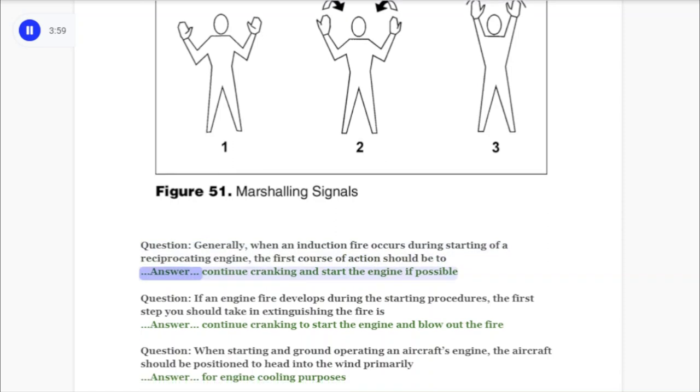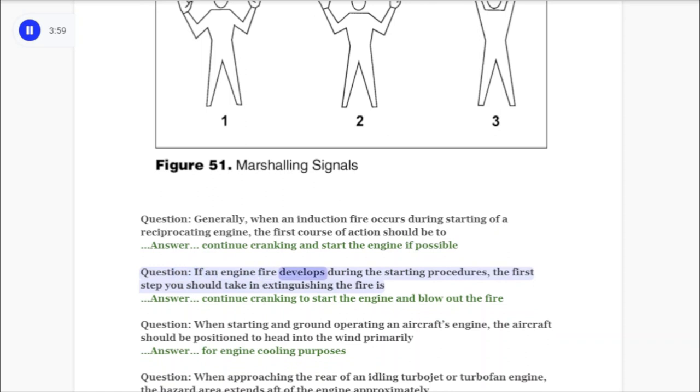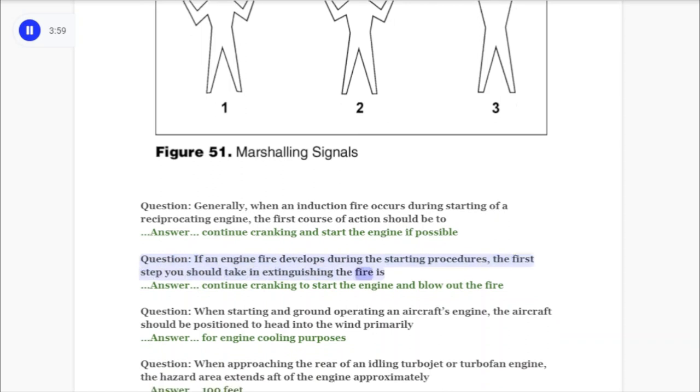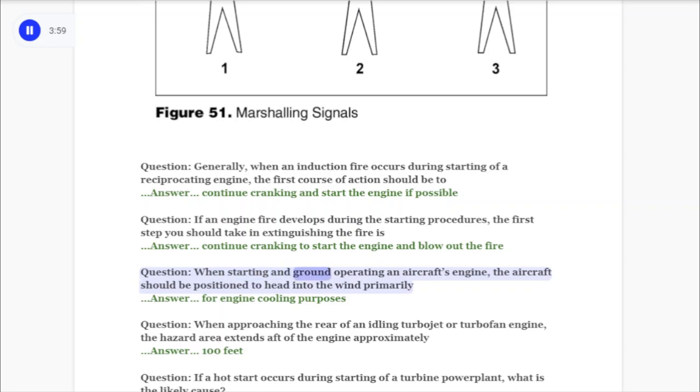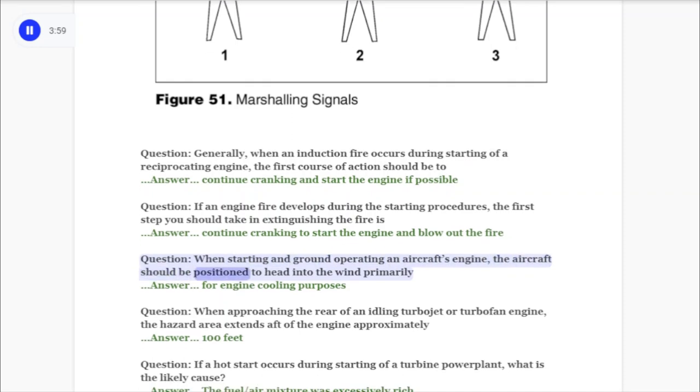Question: If an engine fire develops during the starting procedures, the first step you should take in extinguishing the fire is? Answer: Continue cranking to start the engine and blow out the fire. Question: When starting and ground operating an aircraft's engine, the aircraft should be positioned to head into the wind primarily? Answer: For engine cooling purposes.